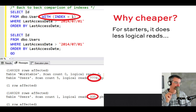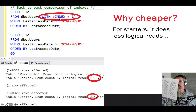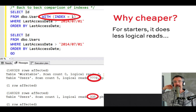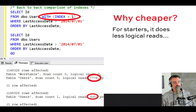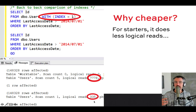First, we're reading fewer pages. If you force the clustered index — that's what index equals one means, though you should never do that in real life — that's about 7,000 logical reads. But when you let SQL Server choose the right index and it chooses the black pages, you only have to do 335 logical reads. The amount of reads drops by about 20x, and that's a good start.